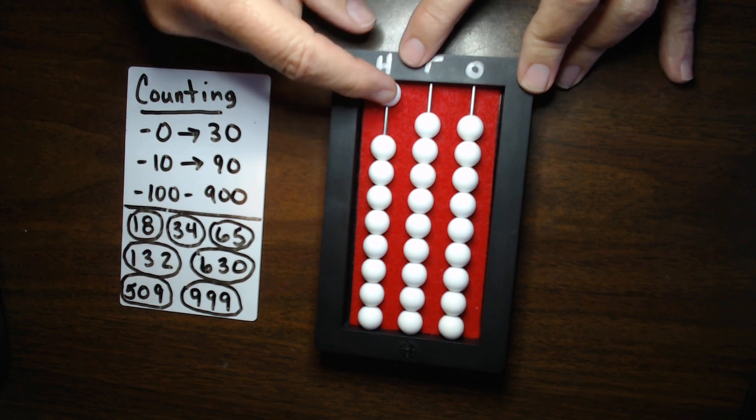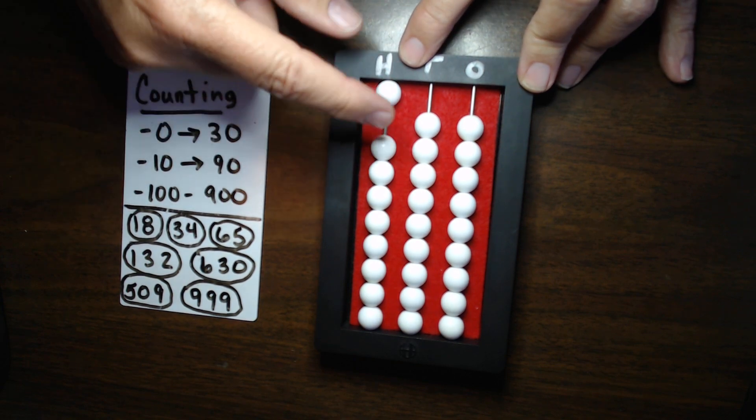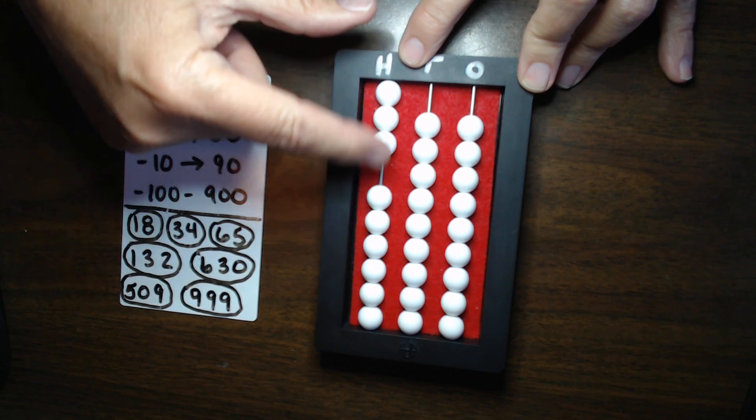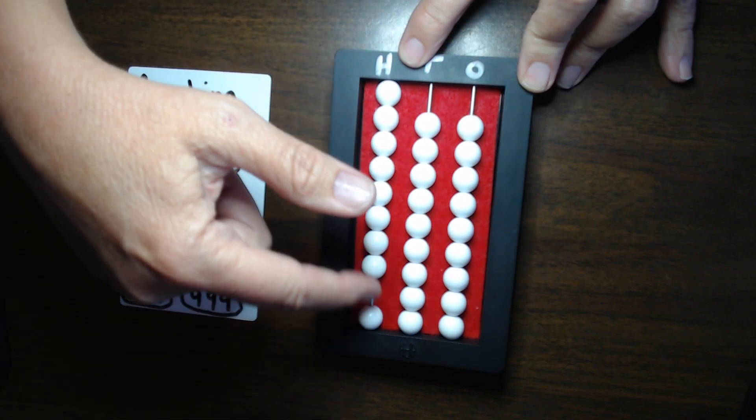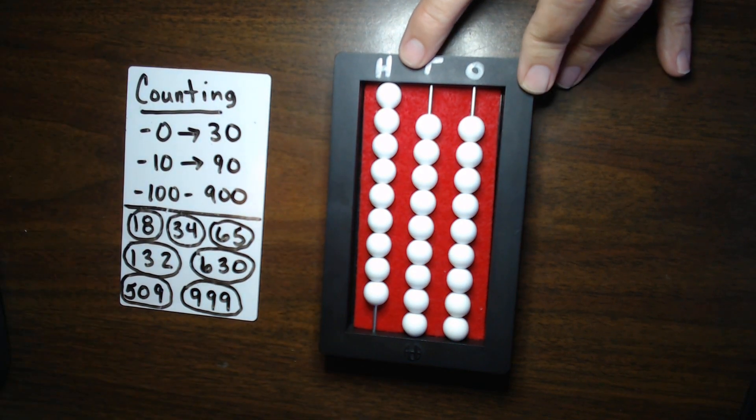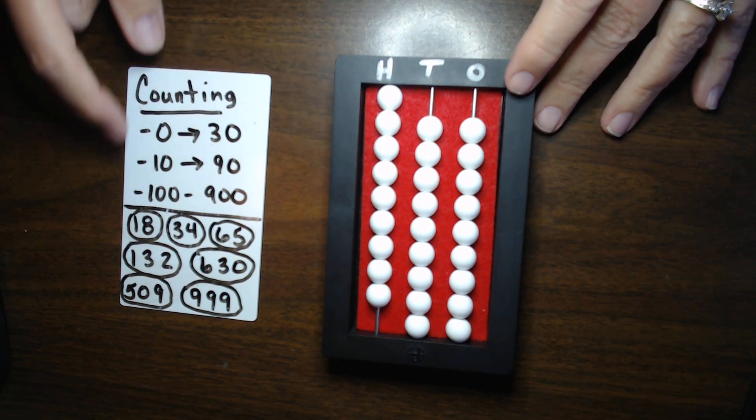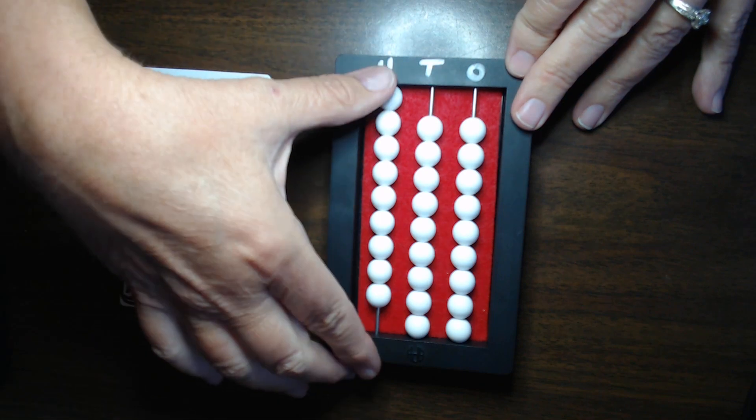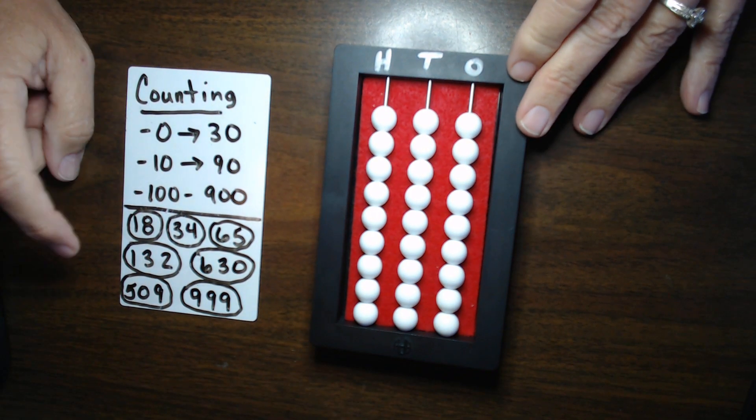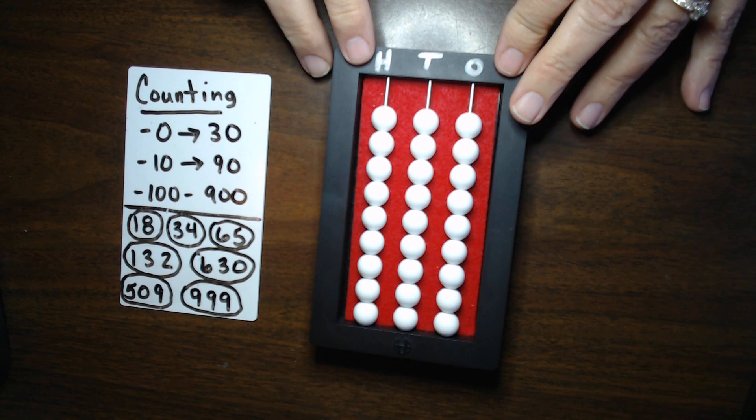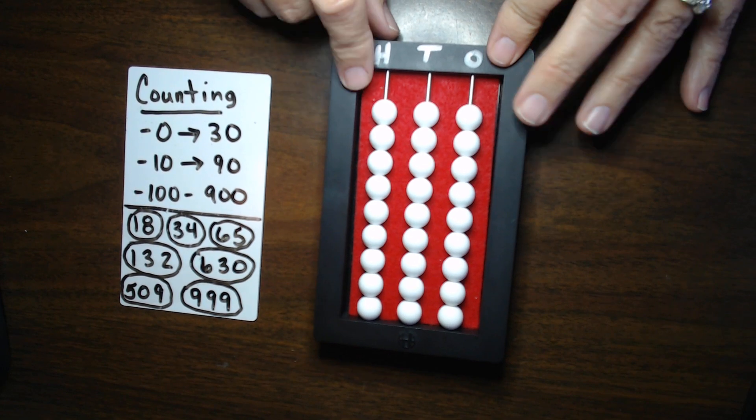And same thing. We could count from the 100 by 100. So, 100, 200, 300, 400, 500, 600, 700, 800, 900. Alright. So, that is how you would count to 900. So, let's clear the abacus. Let's practice setting some numbers. And I think you're really going to get it and be a pro at this.